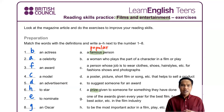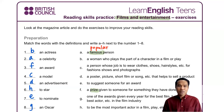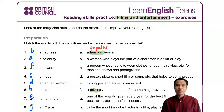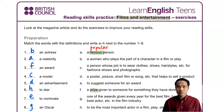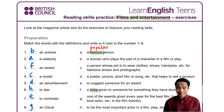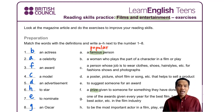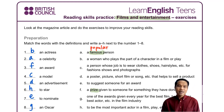Let's try number one together. An actress — an actress is a woman who plays the part of characters in a film or play. Number two: a celebrity. Celebrity means a famous person, or a popular one.